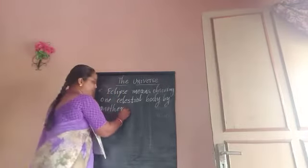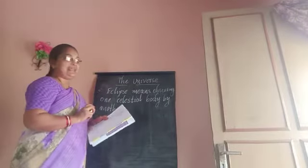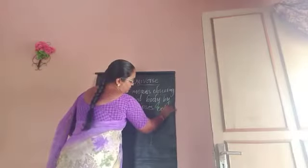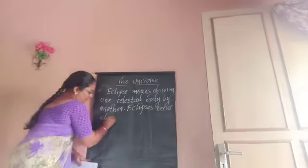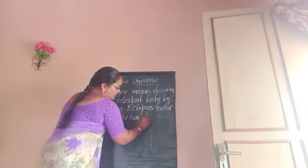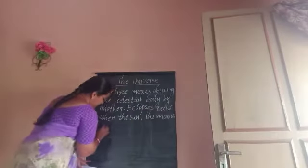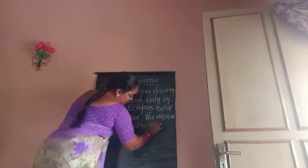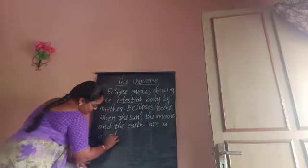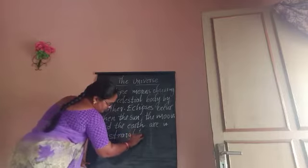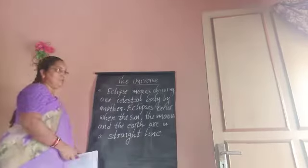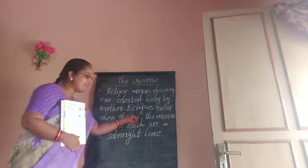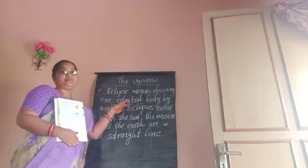What is the condition necessary for these eclipses? Eclipses occur when the sun, the moon, and the earth are in a straight line. The celestial bodies — the sun, the moon, and the earth — they must be in a straight line. Then only will an eclipse occur.